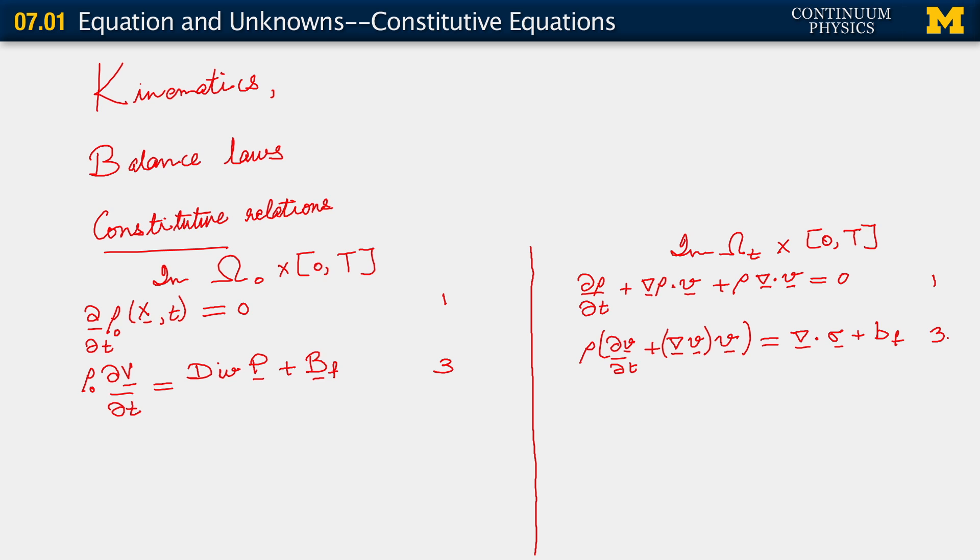Now let's count unknowns. The unknowns here are rho, we have the spatial velocity vector, and we have the Cauchy stress. Now let's count them. Here we have one, three velocities, and six stress components. Six stress components because the Cauchy stress is symmetric. So we have ten.